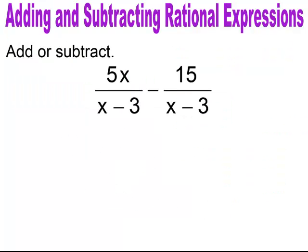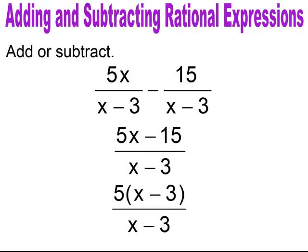Pause and try. You have a common denominator, giving you 5x minus 15 all over x minus 3. Factor out the GCF, cancel the common factors, and your solution is equal to 5.